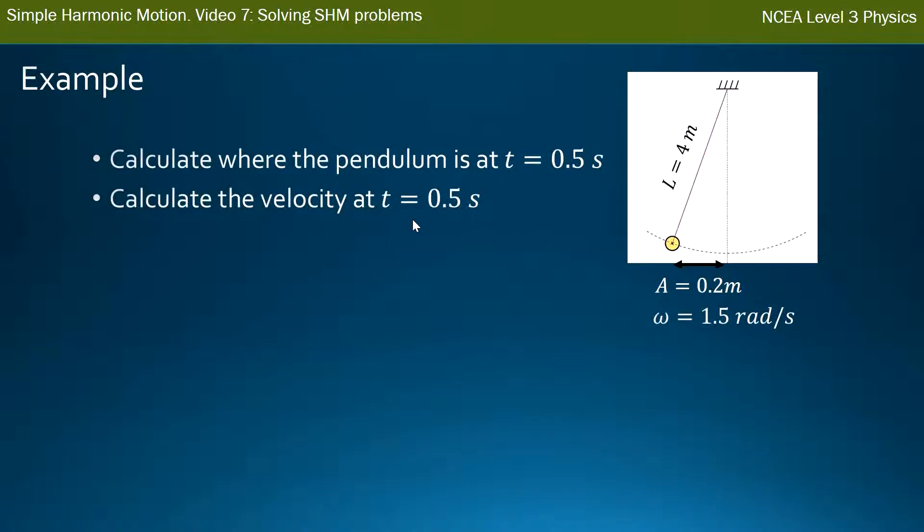In our example, we've got the same situation that was set up before, but let's say the pendulum is starting from the left. We want to know where the pendulum is after 0.5 seconds and what its velocity is after 0.5 seconds.